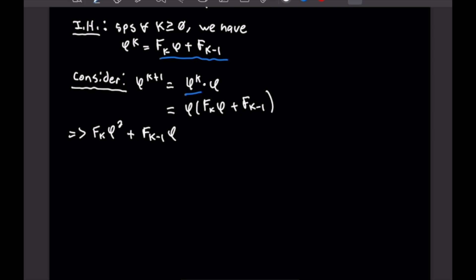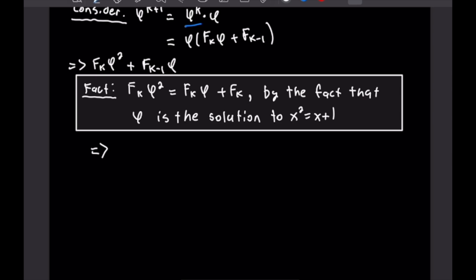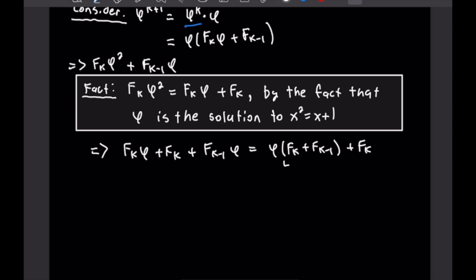Here is the really cool part. We use the fact that F_K · φ² = F_K · φ + F_K, since φ is the solution to x² = x + 1. Substituting, we get F_K·φ + F_K + F_{K−1}·φ. Factoring out φ gives φ(F_K + F_{K−1}) + F_K. By the definition of Fibonacci numbers, F_K + F_{K−1} = F_{K+1}, giving us F_{K+1}·φ + F_K, which is exactly what we needed to prove.